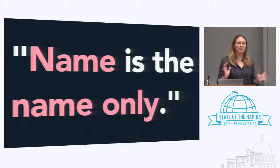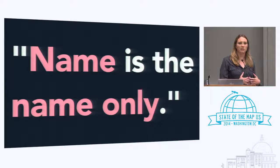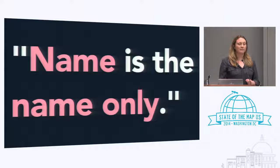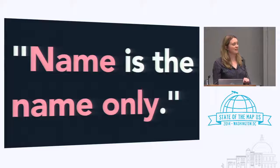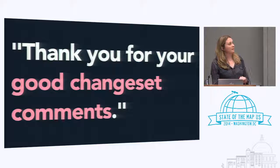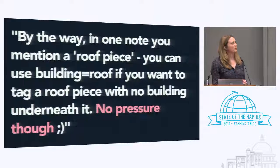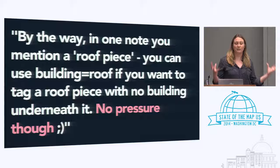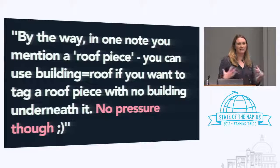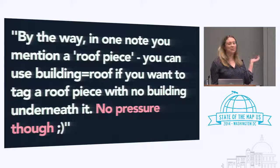A very common problem was that it was very hard to communicate with students who had no experience with data creation — specifically the difference between tagging something with a category versus using the name field to just say what it is. Other contributors picked up on that right away and commented to students that they should modify their tagging. I was very proud that students were commenting on what changes they had made so someone else looking at their changes would understand. My favorite comment of all was someone giving really constructive advice about how to classify a covered parking structure — and then adding, 'No pressure.'